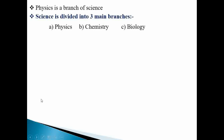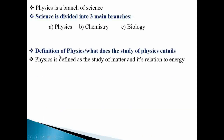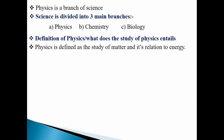In primary school, science was a bit broad. In secondary school, science has been divided into three branches. The first branch is physics, which I will be taking you through. The second branch is chemistry, which will be done with a different teacher. We also have biology, which will also be done with a different teacher. I'll majorly concentrate on physics.